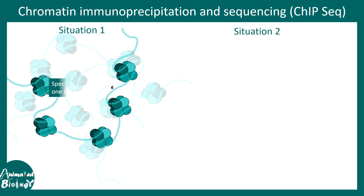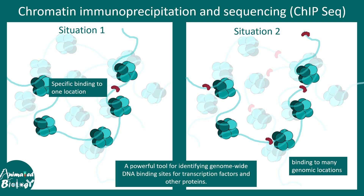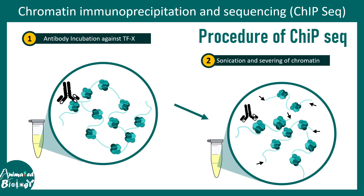We have situation one: there is a specific binding location at one particular location of the genome. There could also be another situation where the binding location spreads across different locations in the genome. We want to have an idea of where the protein of interest or the modified histone is found. A particular antibody against a particular modified histone mark will be used to pull down a region of the chromatin.